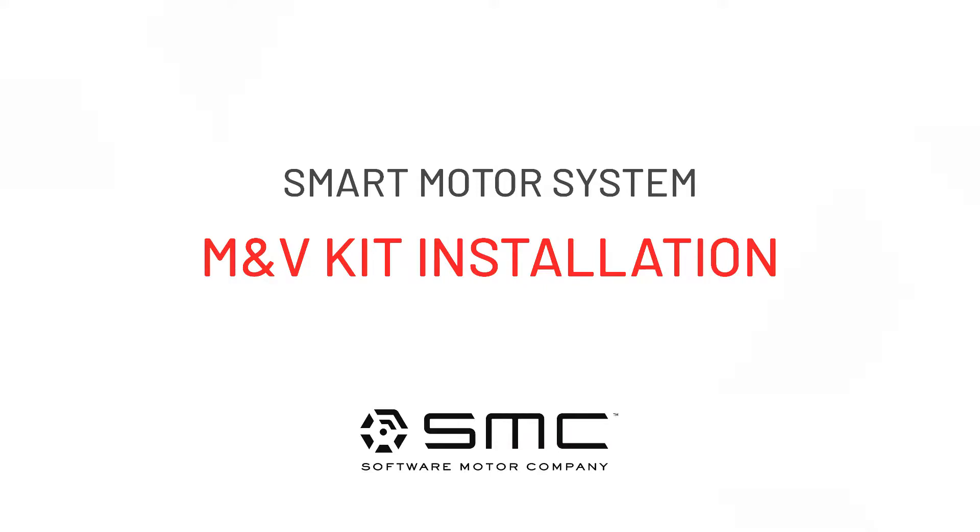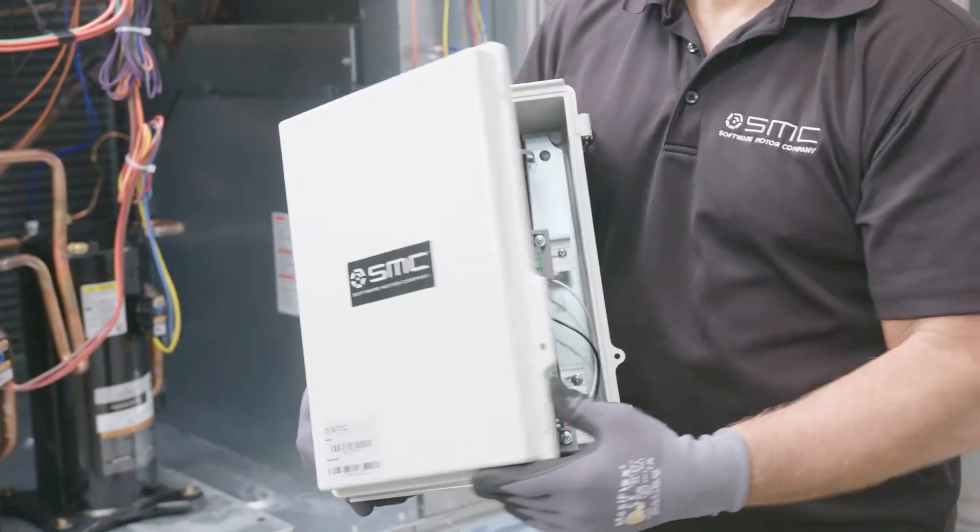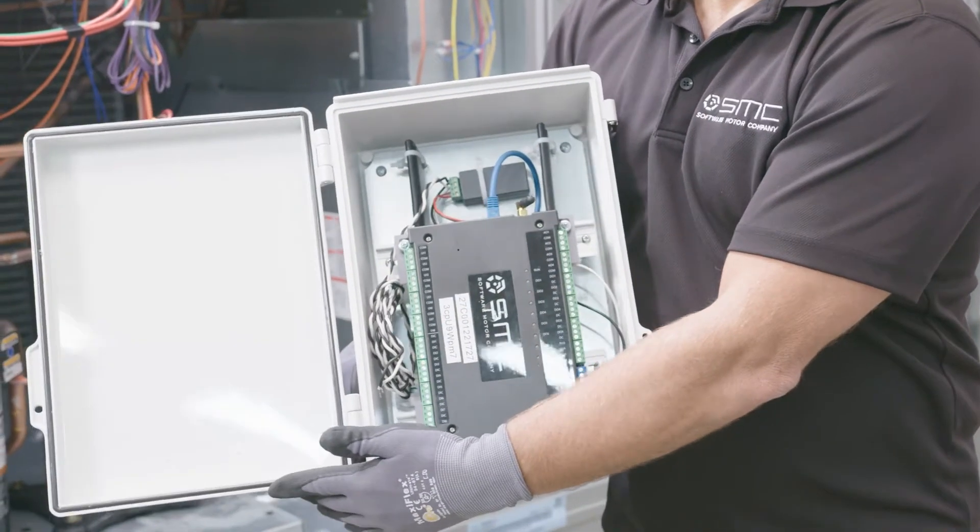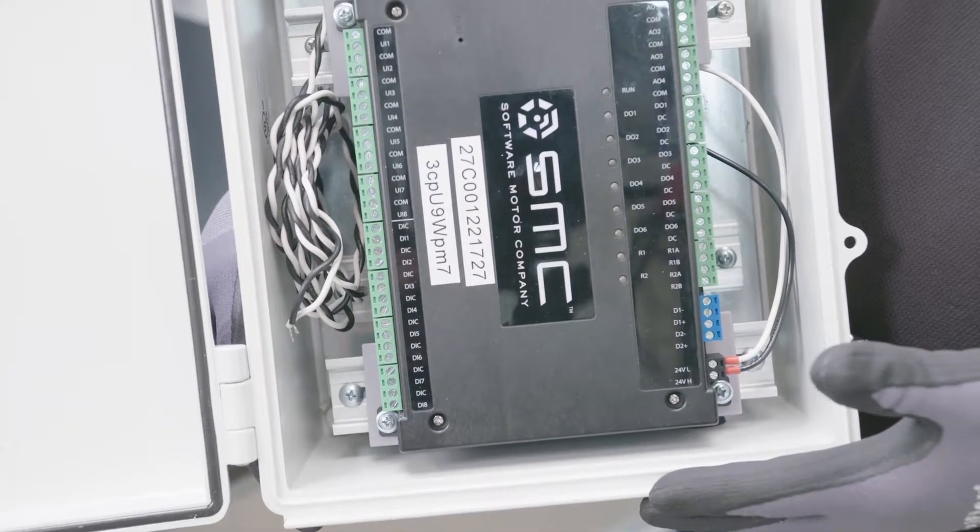In this video, we're going to cover the SMC Measurement and Verification Kit, or M&V Kit. One good use of the M&V Kit is to capture energy performance data which can allow you to compare the existing induction motor's operational efficiency to the SMC Smart Motor System.